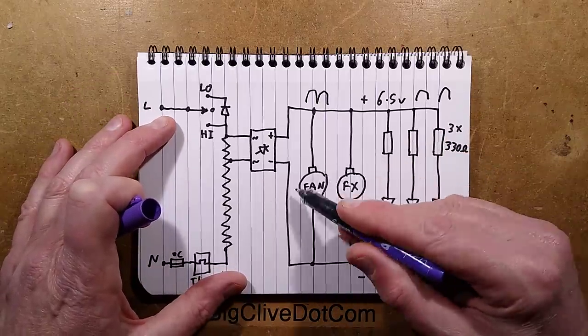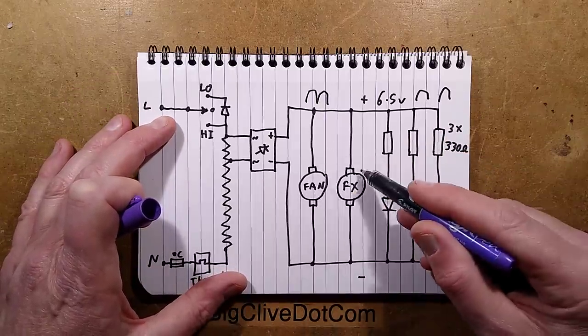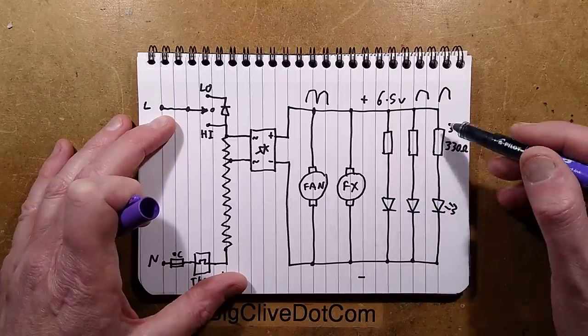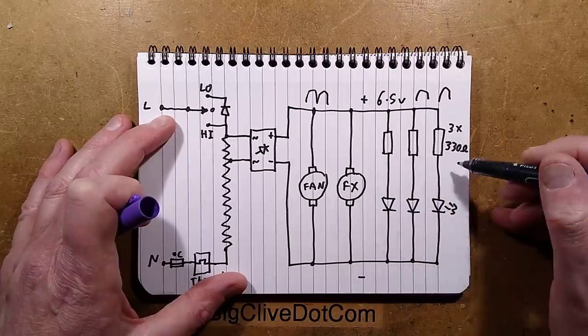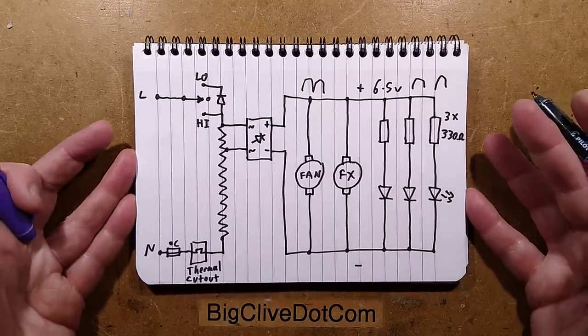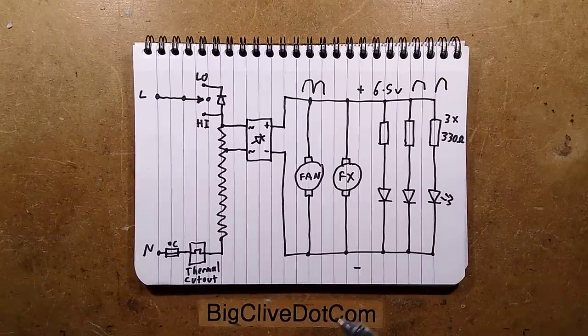There is the fan running directly across that and the effects motor running directly across that. And then each of the three LEDs has its own resistor in series, three 330 ohm resistors. Peculiar. Strange little circuit but it's not complex, it's very simple.